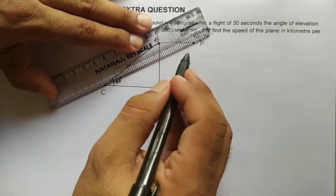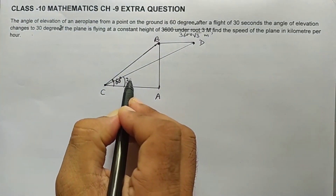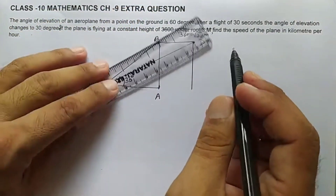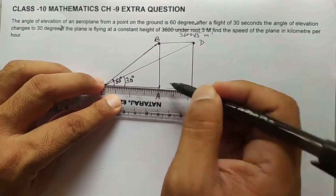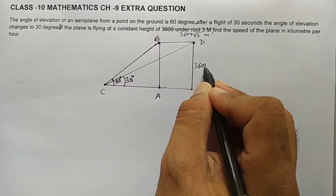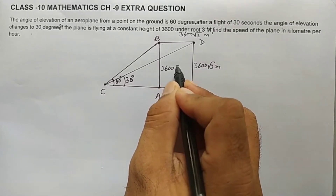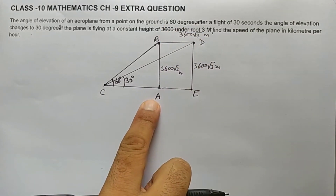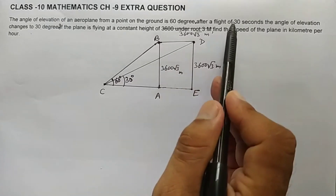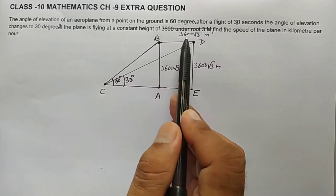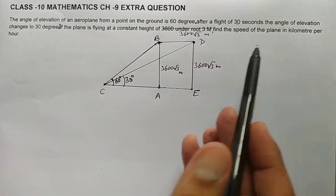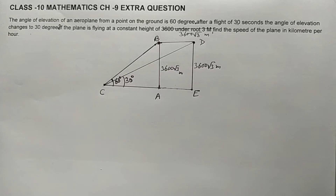From point C, the ray of sight to D and the horizontal give an angle that changes to 30 degrees. We can draw the height. The aeroplane is flying at a constant height of 3600√3 meters, meaning DE equals AB equals 3600√3 meters — the height is not changing. The distance BD is what the aeroplane has traveled in 30 seconds, during which the angle changed from 60 degrees to 30 degrees. We need to find the speed of the plane in kilometers per hour.